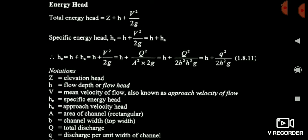Now you can see the energy head. The total head is equal to the energy head. Z is the elevation head, H is the flow depth, and V²/2g is the velocity head. Additionally, we can replace velocity V by Q/A — velocity is equal to discharge divided by area. So V²/2g can be replaced as Q²/(A²·2g).